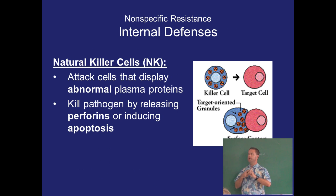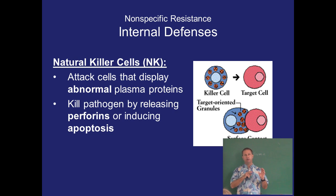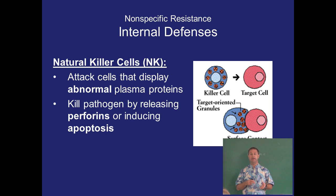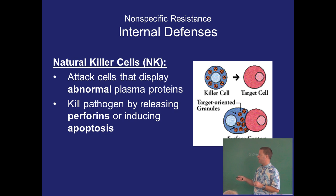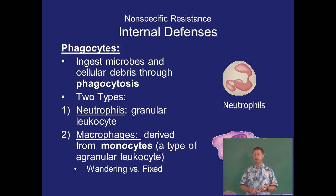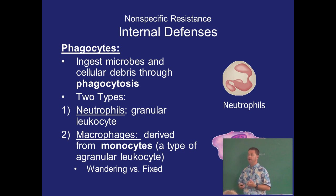Internal nonspecific defenses include natural killer cells, which basically attack any cell that shows an abnormal plasma protein. The cells inside a dog or cat's body have markers that tell the immune system 'I belong,' whereas invading cells have different markers. Natural killer cells wander around detecting anything with abnormal cellular markers and neutralize them by inducing apoptosis. Phagocytes — neutrophils and macrophages — gobble up bacteria and infected cells. They're good against a wide variety of pathogens.